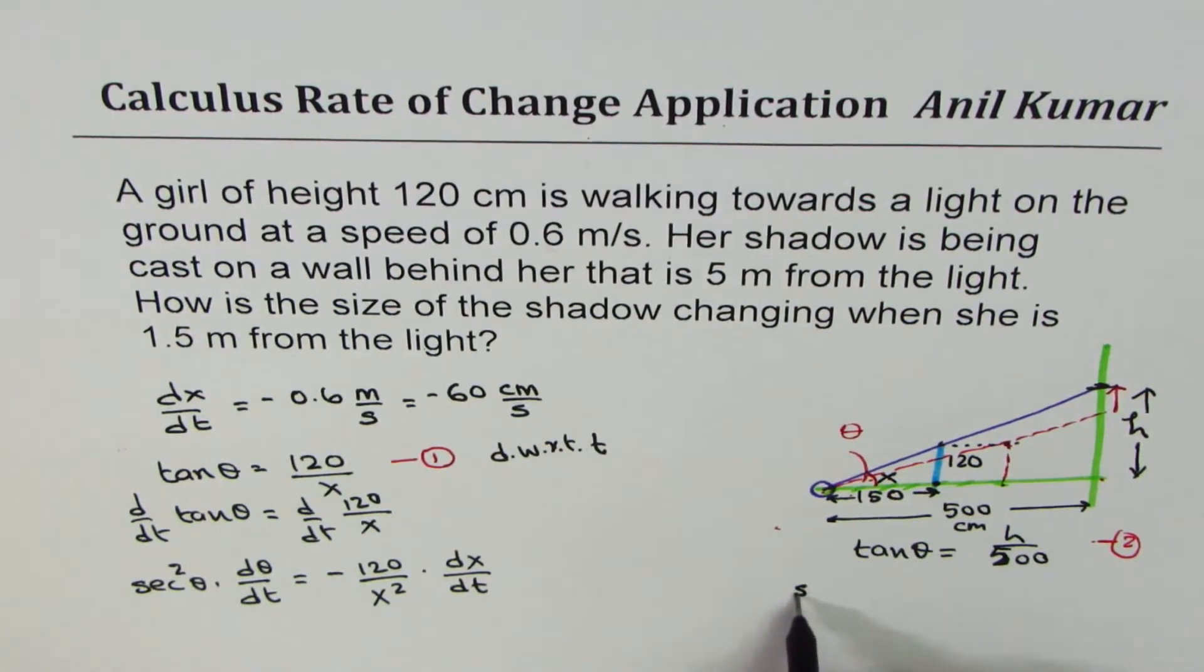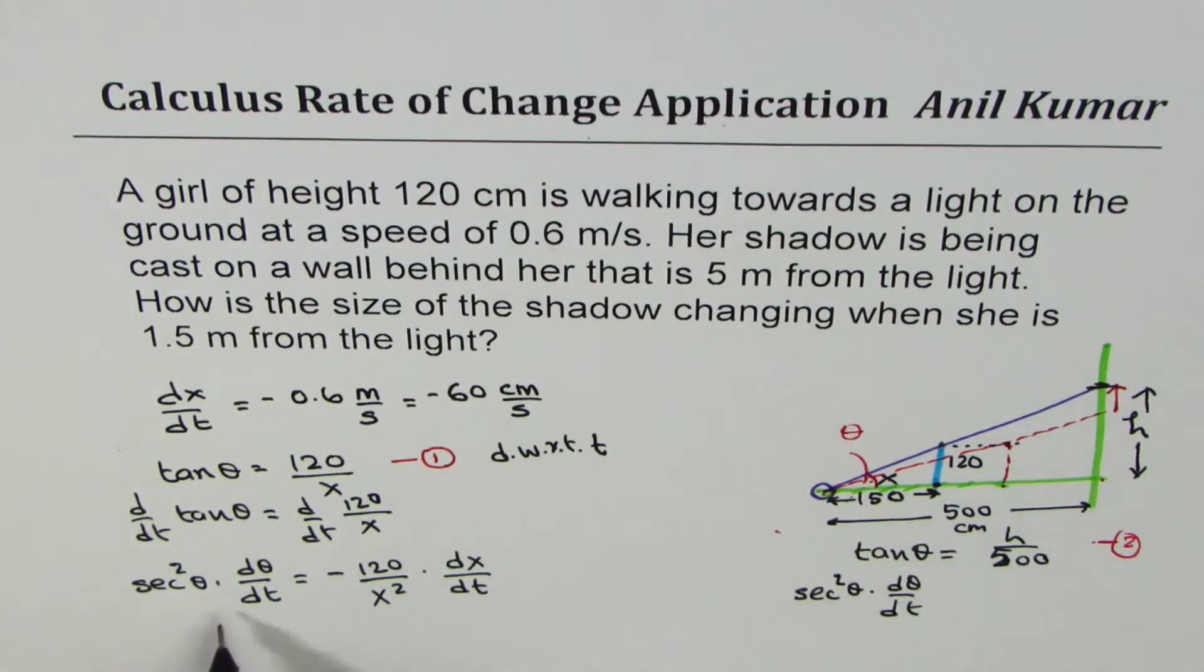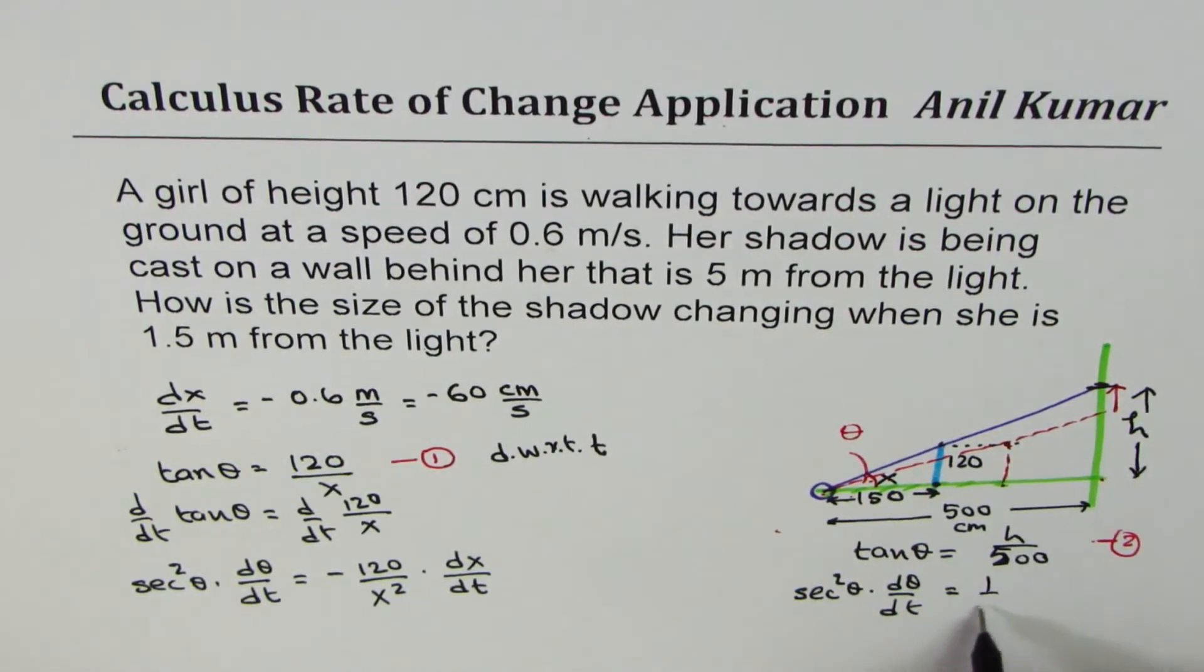So doing the same thing here, we do get secant square theta d theta/dt. Derivative of left side is same as what we saw here. With respect to time, we get dh/dt. So we have 1 over 500 dh/dt. Do you see that?